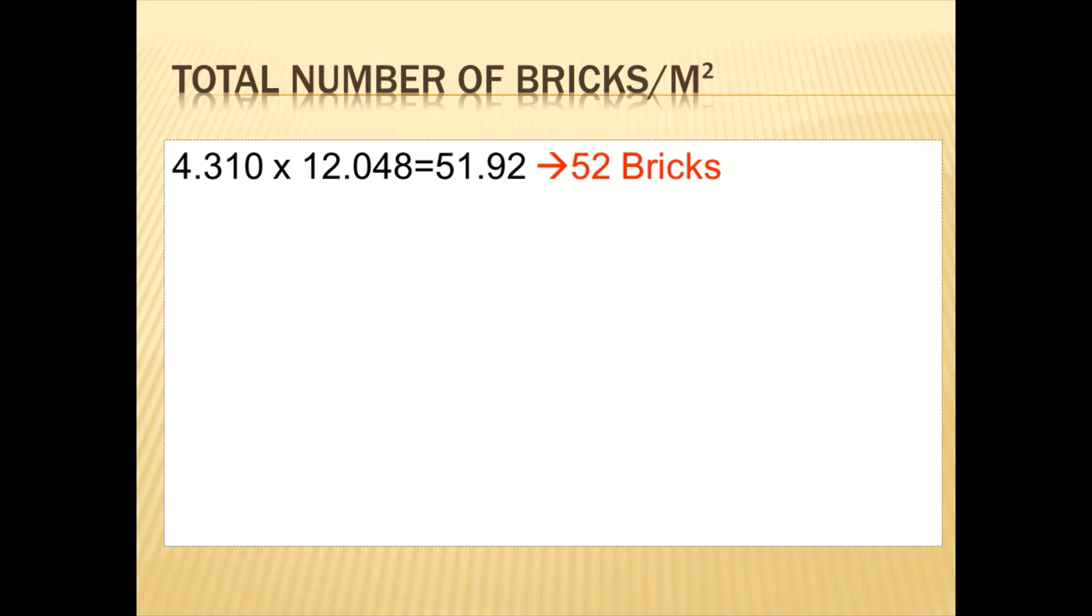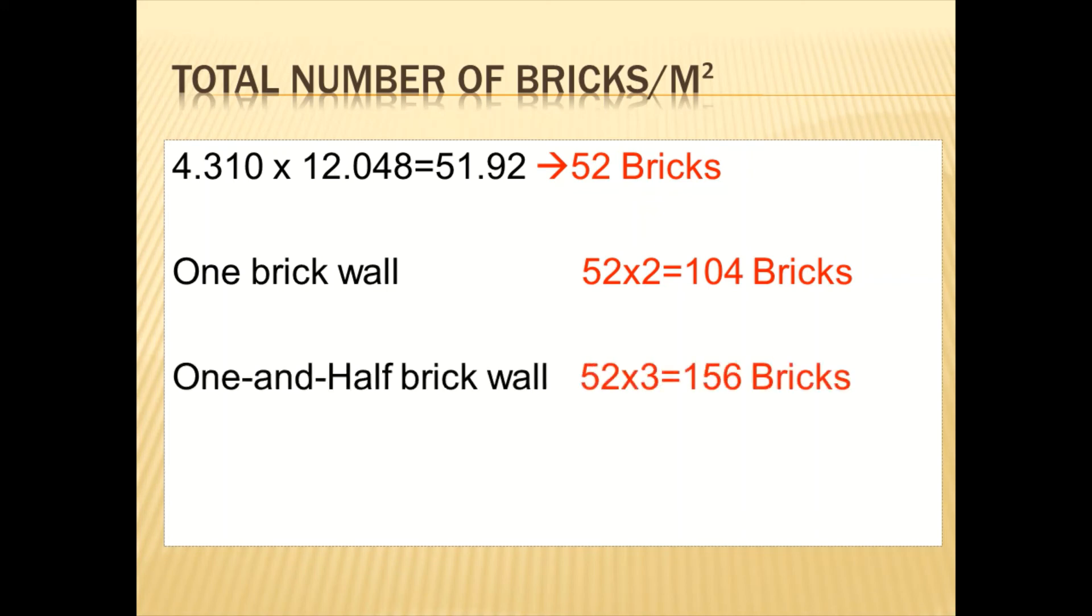That is in a half brick wall, which consists of a single skin. And then our one brick wall, we'll just say 52 multiplied by 2, which gives us 104 bricks. And then one-and-a-half brick wall, we'll say 52 multiplied by 3, which gives us 156 bricks. For your cavity wall as well, you would have the same number of bricks that you have for your one brick wall.